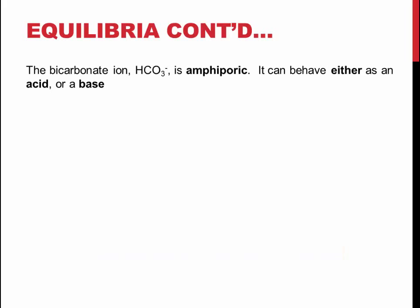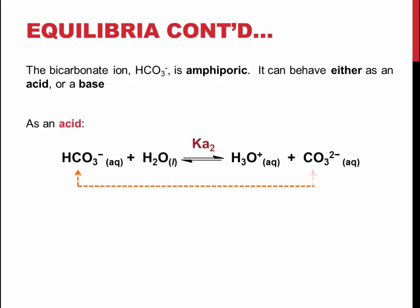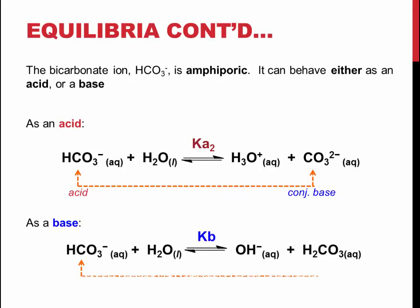Bicarbonate has the ability to either gain or lose a proton. If it loses a second proton, acting as an acid, it becomes the carbonate ion, and the constant for the reaction is Ka2. If it regains a proton and acts as a base, it returns to being carbonic acid, and the reverse reaction constant is Kb.